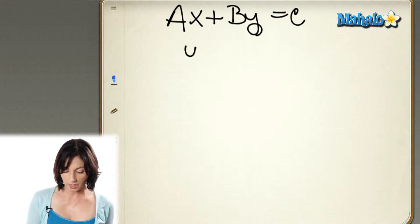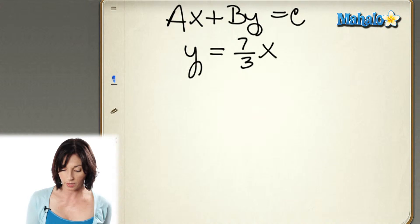Let's use this equation of a line: y equals 7 thirds x minus 12.